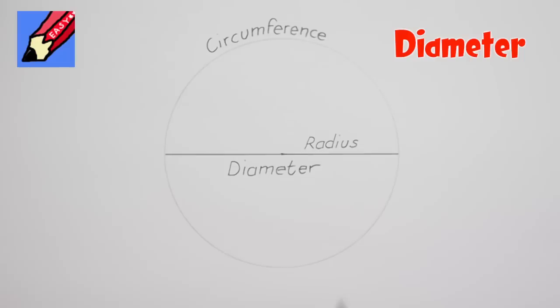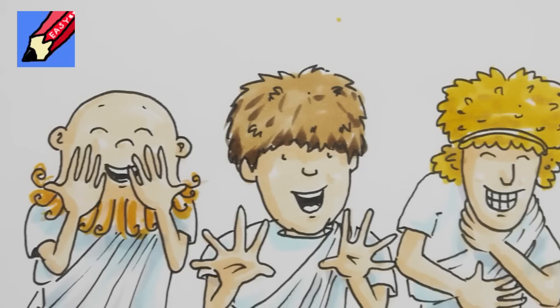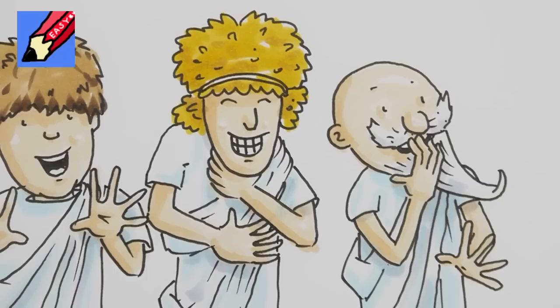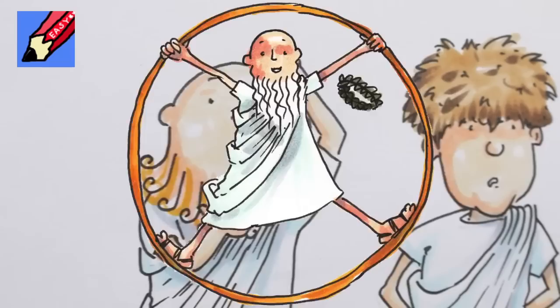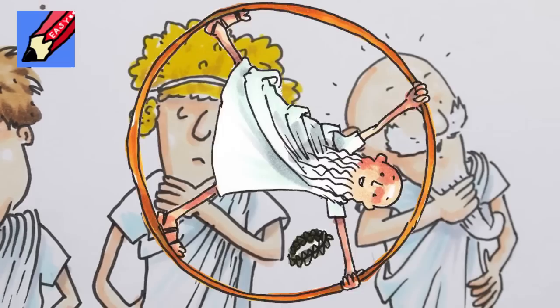Euclid was really good at thinking up names for things. That's amazing, said Euclid's friends. It is, Euclid agreed, and that is probably enough for today. I'll tell you more about circles and triangles next time.